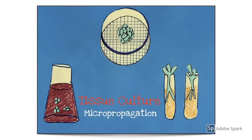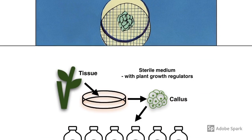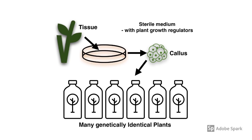The final method of artificial vegetative propagation is micropropagation, also known as tissue culturing. A small piece of tissue is removed from the parent plant and transferred to a sterile growth medium, where it grows into a mass of undifferentiated cells known as a callus. The callus is then treated with different concentrations of growth regulators to stimulate the production of roots and then shoots, eventually leading to many identical seedlings that can be planted normally.